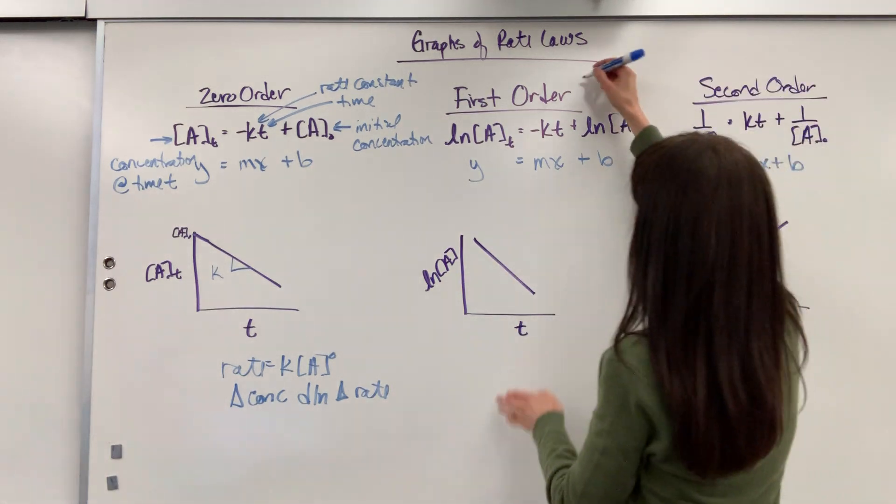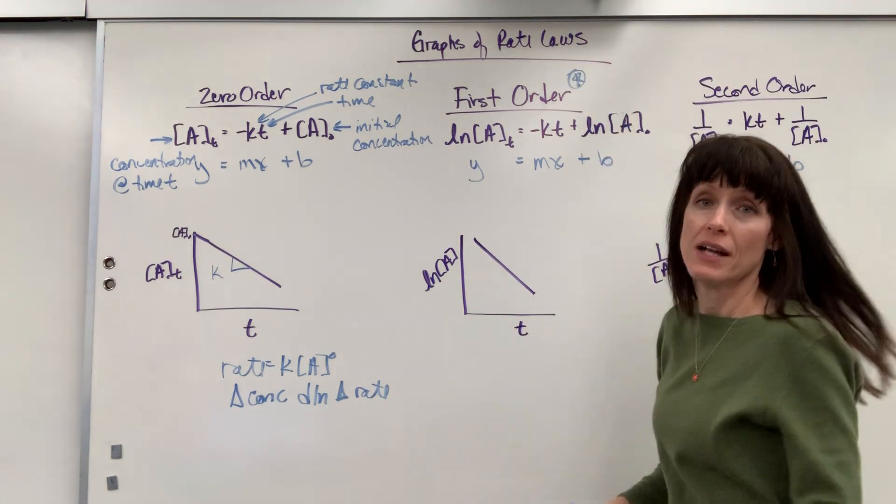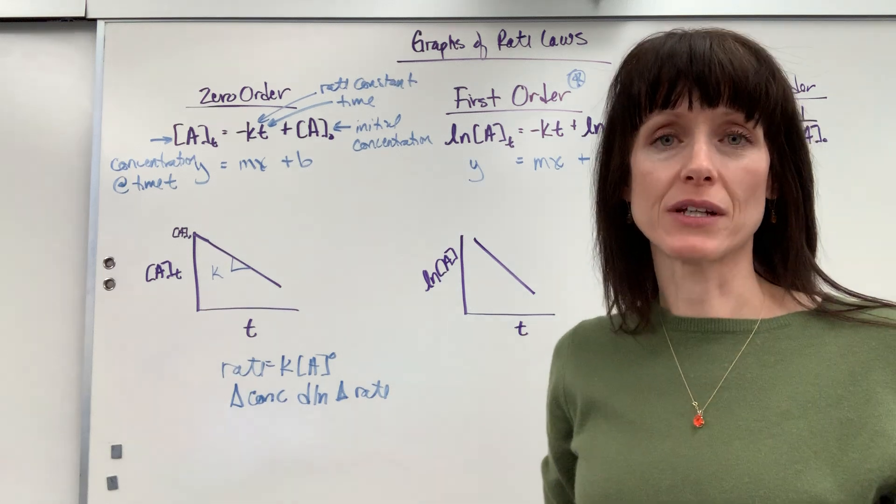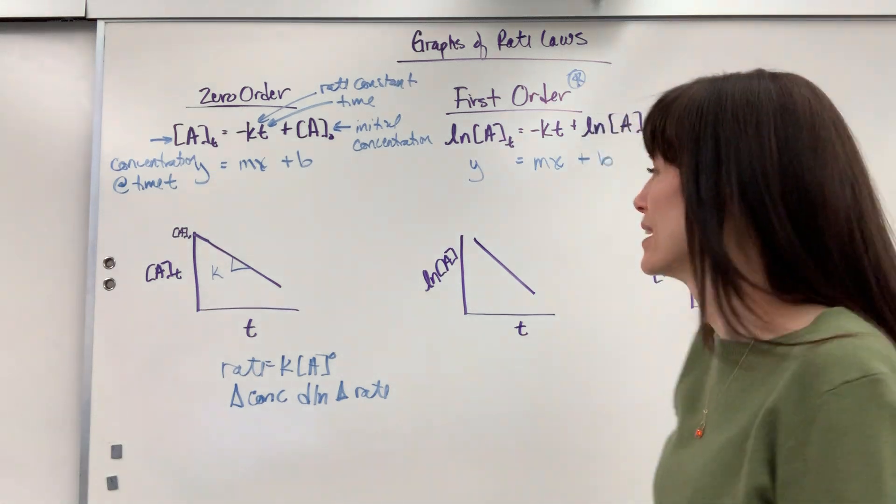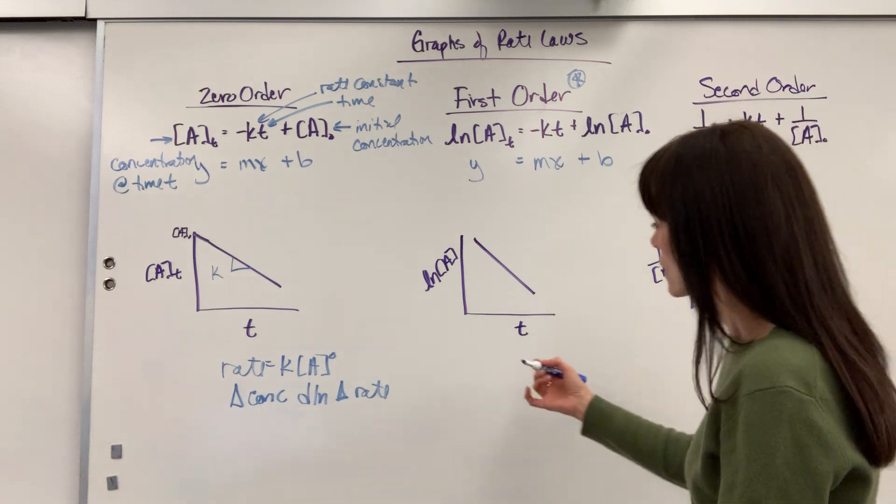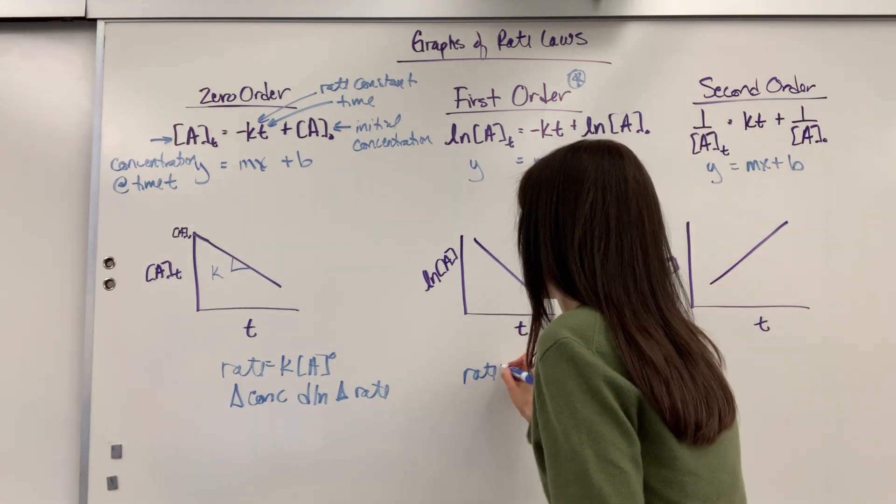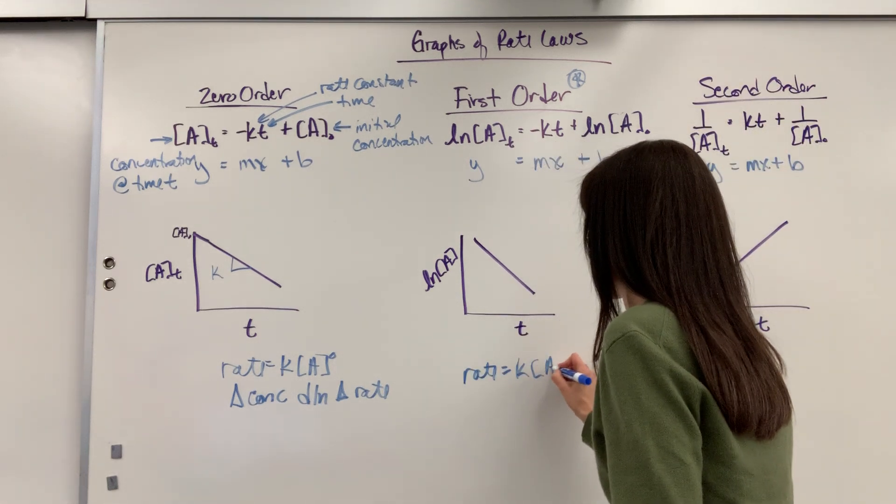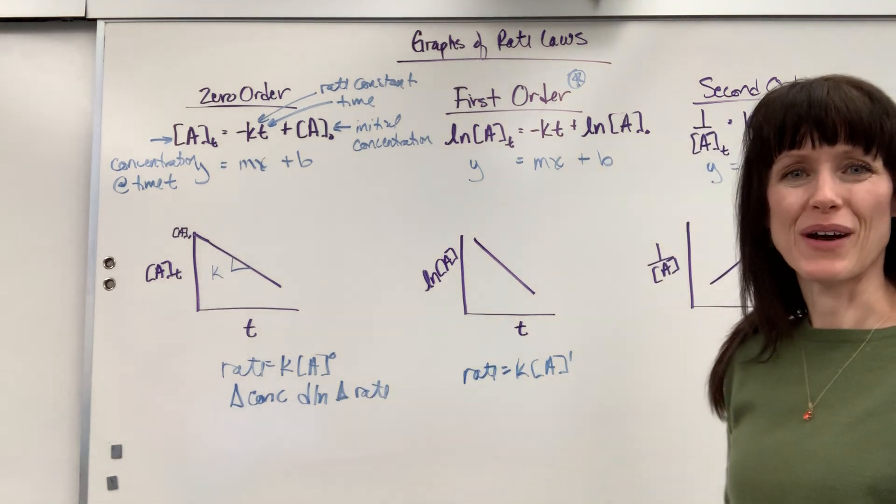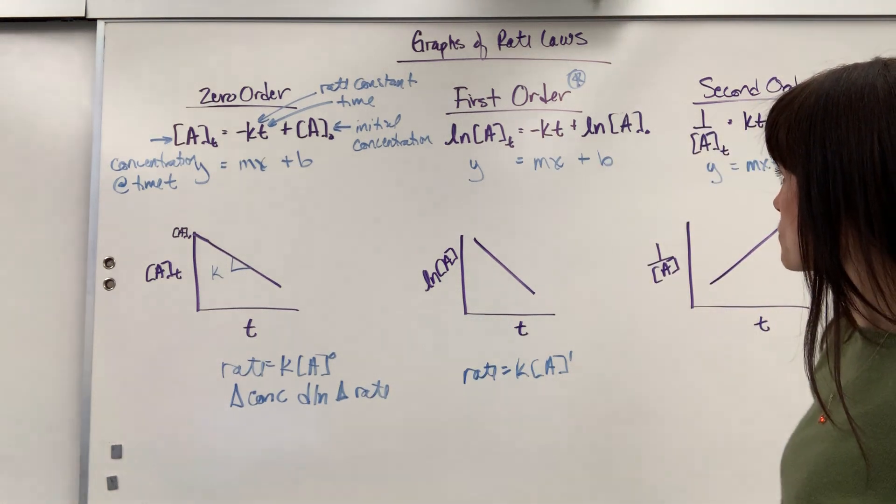First order. This one we use a lot. This is all of our nuclear chemistry is going to be first order, and a lot of our traditional chemistry falls in first order. A first order reaction would look like this: rate equals K times the concentration of A to the first order, that you have a one right there.